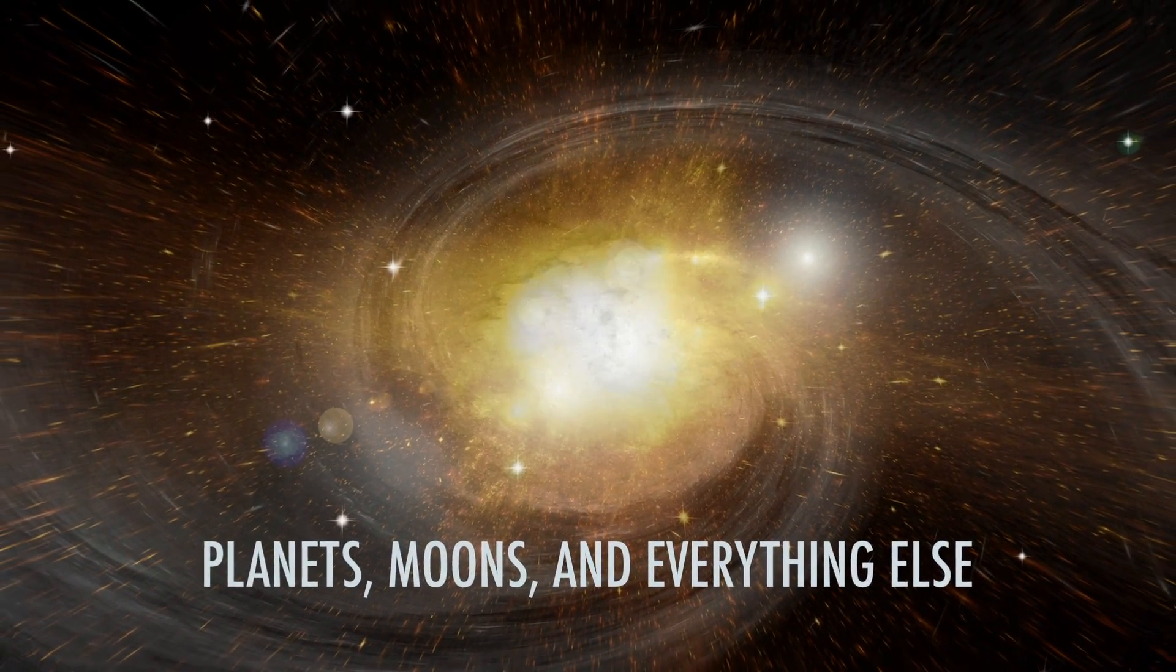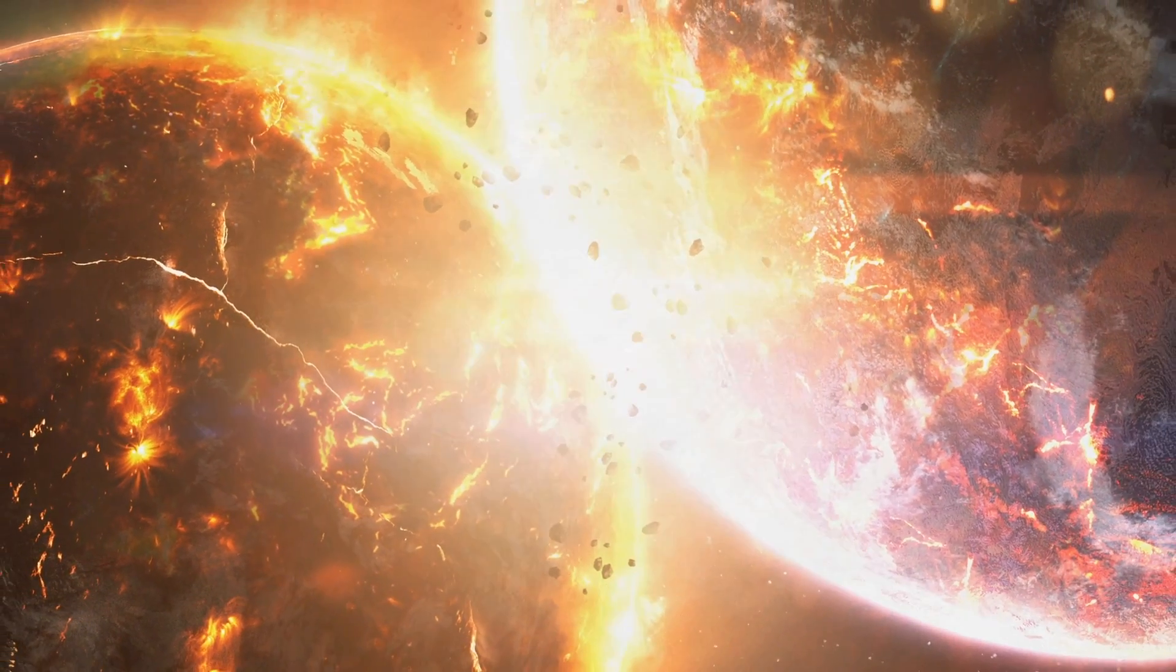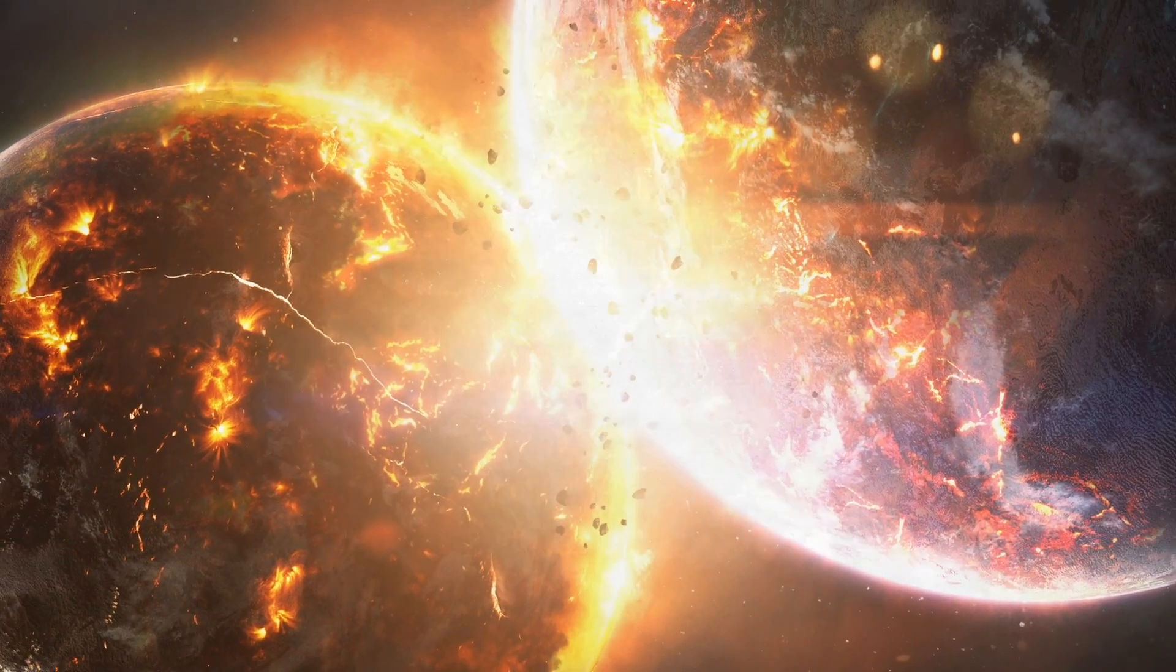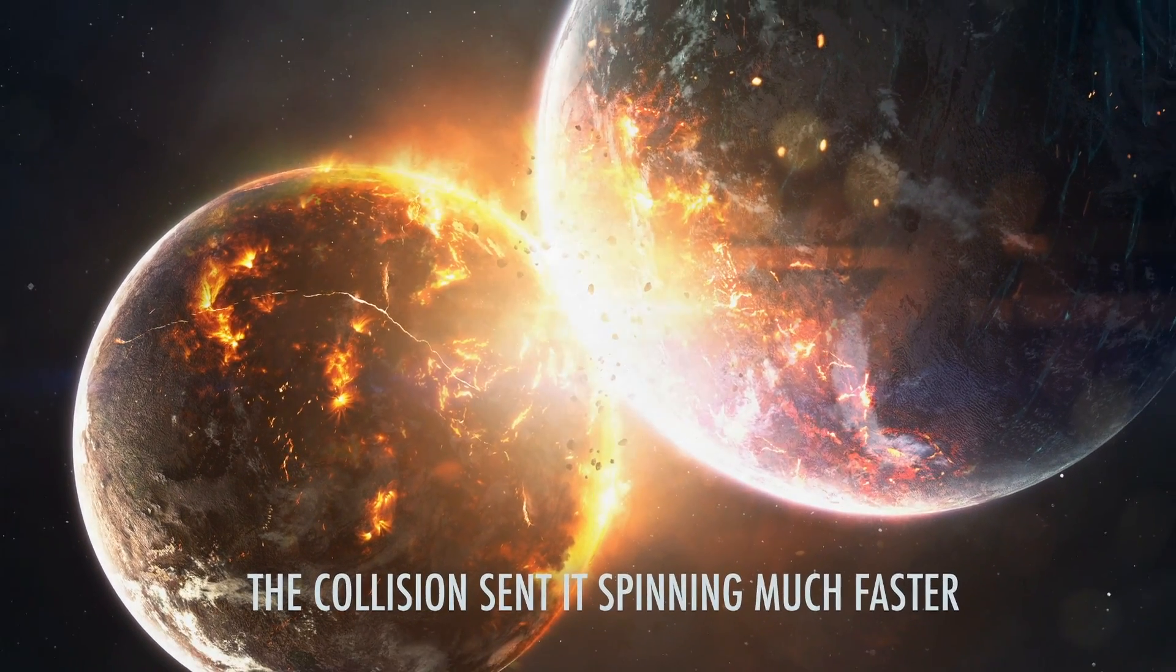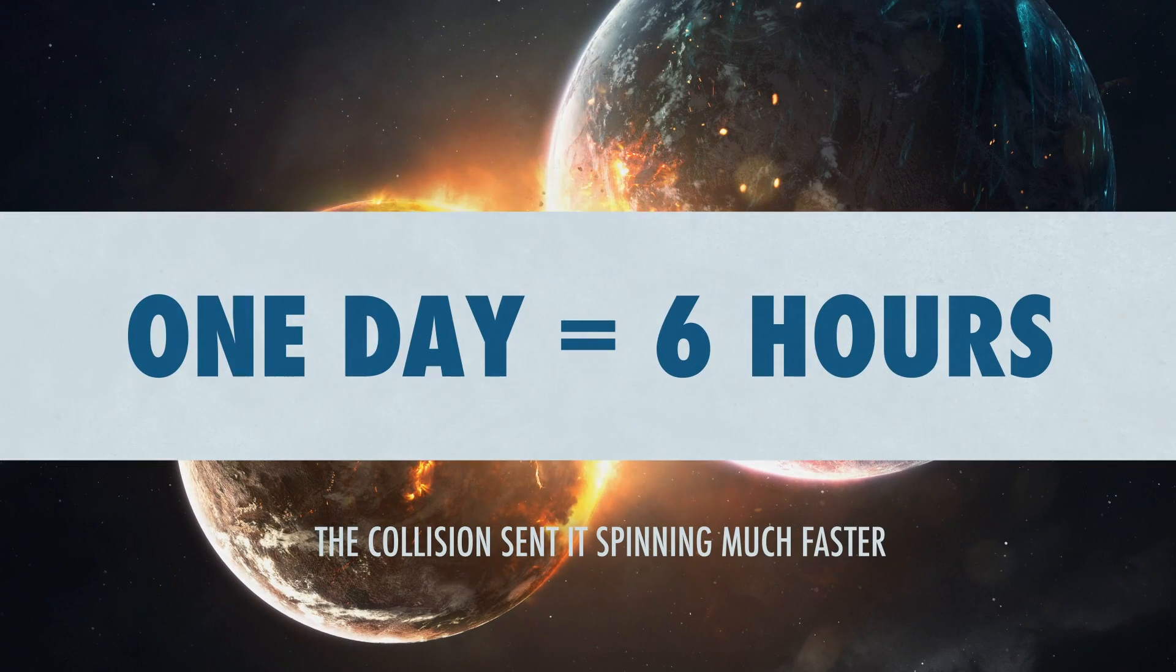This initial force translated into a rotation of the Earth when it formed, but it's also thought that in the early stages, a large object around the size of the planet Mars collided with the Earth, and sent it spinning much faster. Back then, one full day on Earth would have only lasted 6 hours.